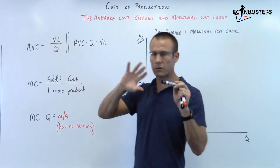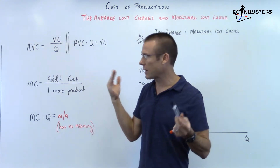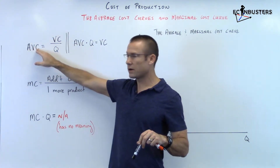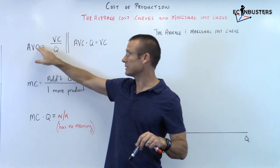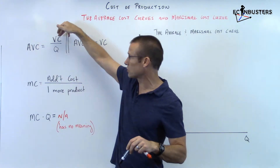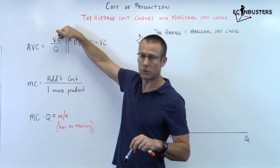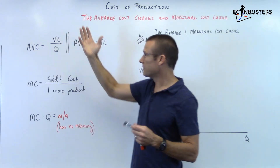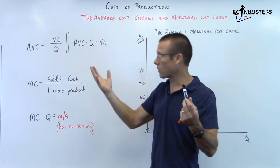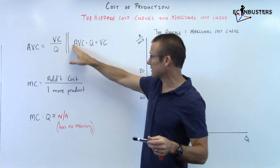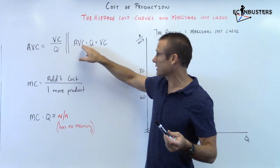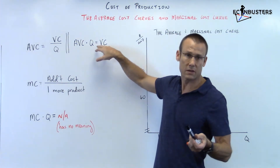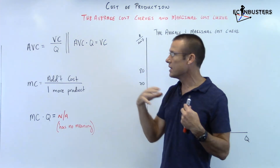Just a couple of really easy things we should know right now. Average variable cost — what does average variable cost equal? It equals the total variable cost divided by the quantity. Therefore, the average variable cost times the quantity equals the variable cost, or total variable cost.